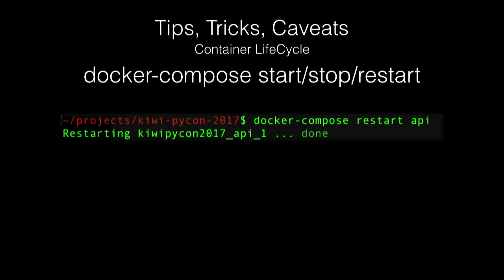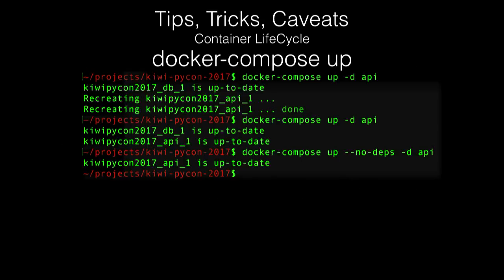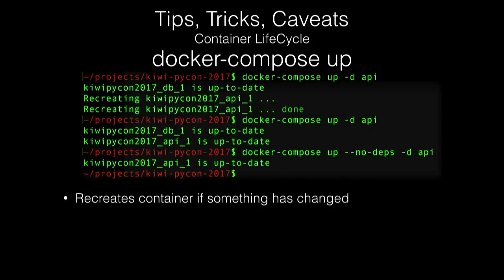Things do get fishy sometimes, so let's talk about tips, tricks, and caveats. Docker Compose has commands for starting, stopping, and restarting containers. It's important to understand that when you start, stop, or restart, you still have the exact same container — nothing has changed, like putting your action figure away and pulling it back out. Up, on the other hand, does a variety of strange things. If anything has changed in the Docker Compose file — a volume, port binding, environment variables — it's going to recreate the container. If a newer image has been built, it detects that and recreates the container. It kills the old action figure and gives you a brand new one.